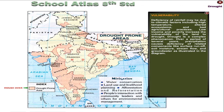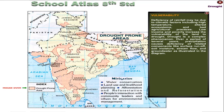Over a period of several years, precipitation causes deficiency of related components like surface runoff, soil moisture, stream flow and groundwater, as illustrated in the diagram.